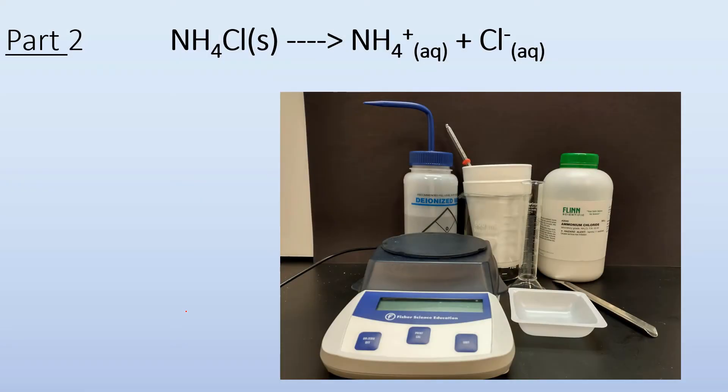In part two, we're simply dissolving ammonium chloride solid in water so that it breaks up into ammonium ion and chloride ion. The materials we're going to need are distilled water, ammonium chloride solid in a stock bottle, and a calorimeter, which is just those styrofoam cups from last part, clean and dried.